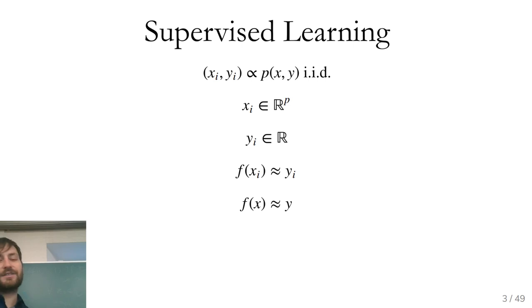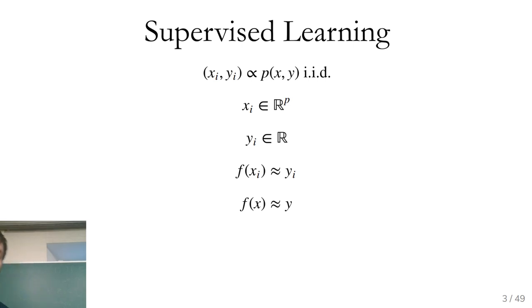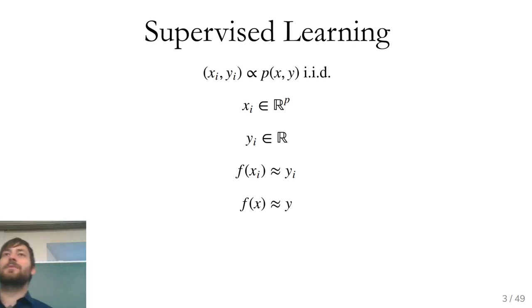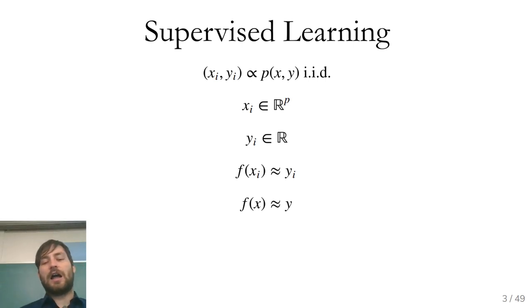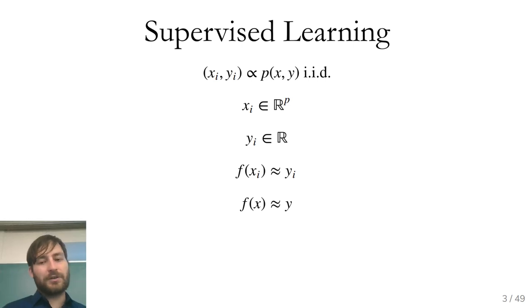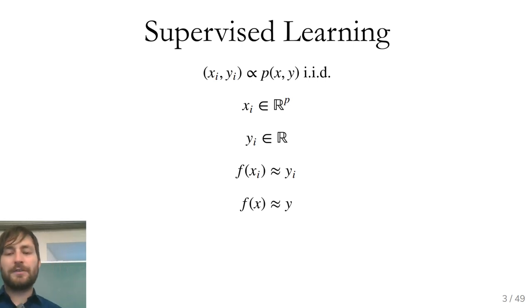These samples form the training set where we have the true labels. We want a learned function that approximates the distribution well on the training set but also generalizes to new samples drawn from the same distribution. I want to talk about some very simple and basic algorithms so those unfamiliar get an idea of what the flavor of these algorithms is.